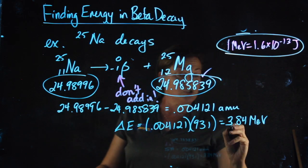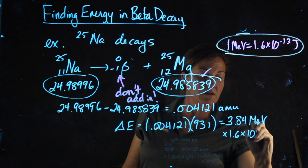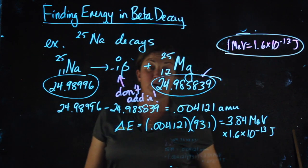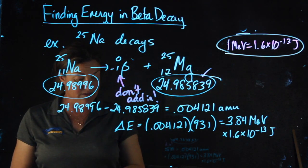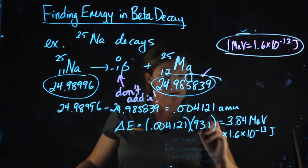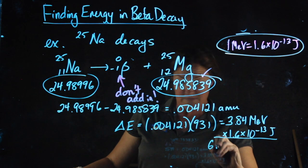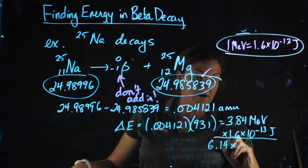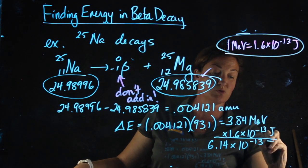To convert to joules, I'm multiplying by 1.6 times 10 to the negative 13th. And this yields 6.14 times 10 to the negative 13th joules.